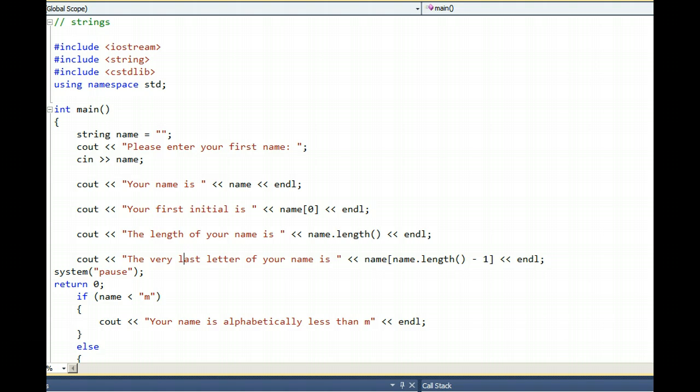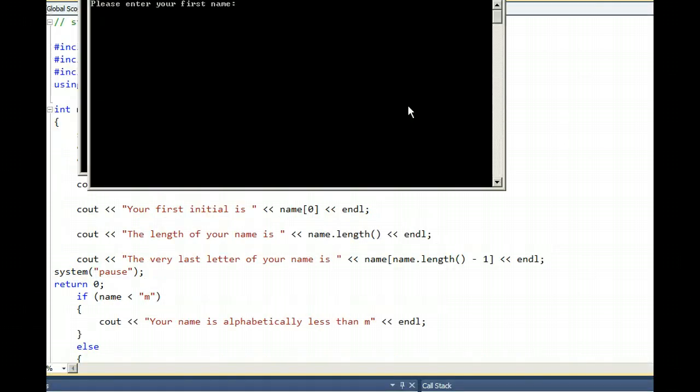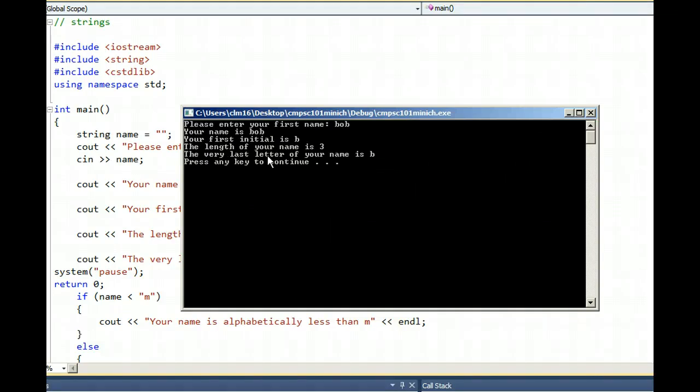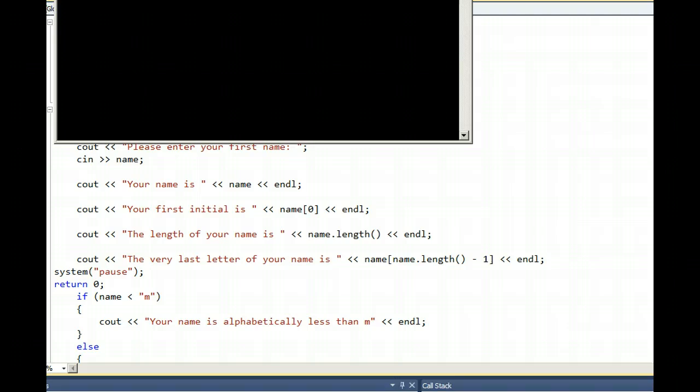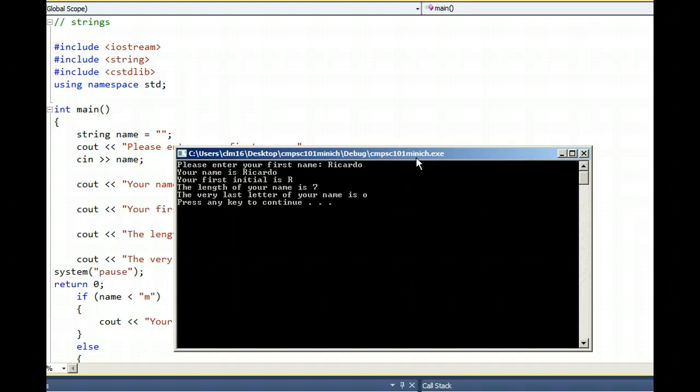Let's check it out and run the program with different names of different lengths. The word Bob - the program does print out that the last letter was B. Run the program with a long name like Ricardo. And the letter O does print out as the last letter because the length of Ricardo is seven.